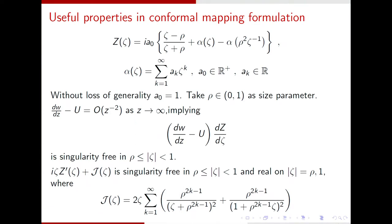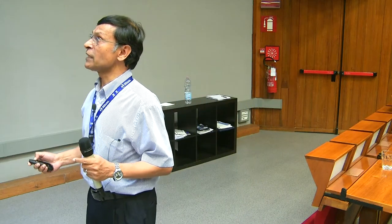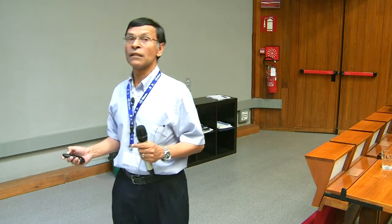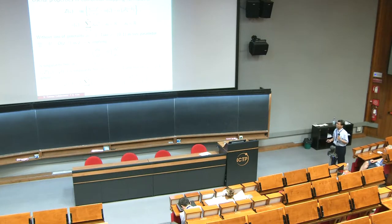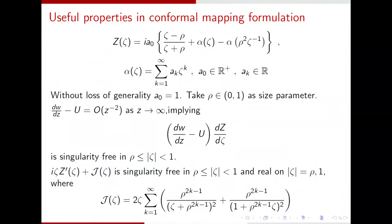With that, now, remember, we have the freedom of choosing one length scale to be one, and we might as well choose A naught to be one as the choice of that length scale. And vorticity omega is chosen to be one. As far as the size parameter, we'll choose rho as the size parameter. When rho tends to zero, you get a nearly circular vortex. And when rho becomes, tends to one, you get extremely deformed vortex.